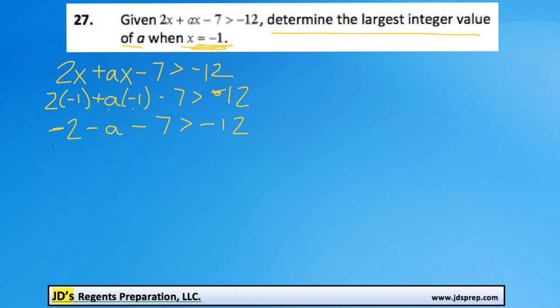Next we can combine these two terms together. Negative 2 minus 7 is negative 9. So we have negative 9 minus a is greater than negative 12.